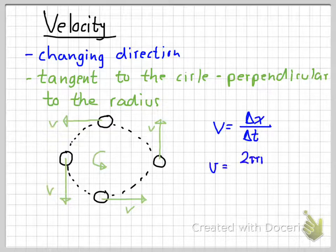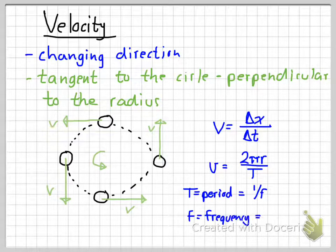Remember that the definition of velocity is your displacement over your time. If we're talking about a circle, then the displacement is just the circumference, like two pi times r. And the time is the period, which is the time needed for one circle to be completed.